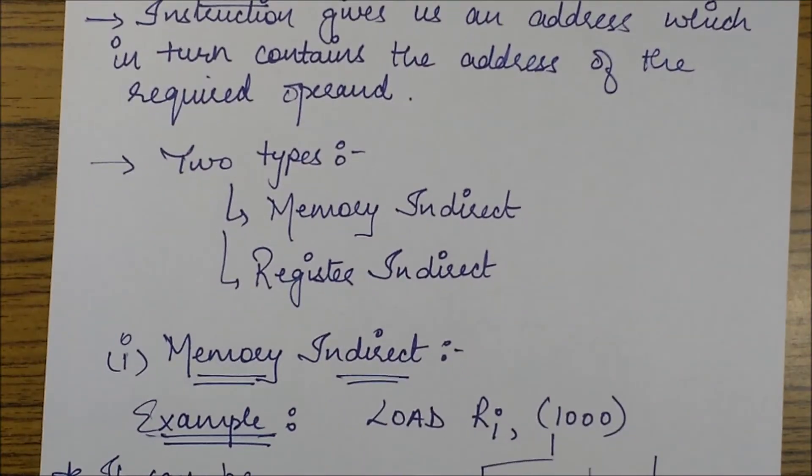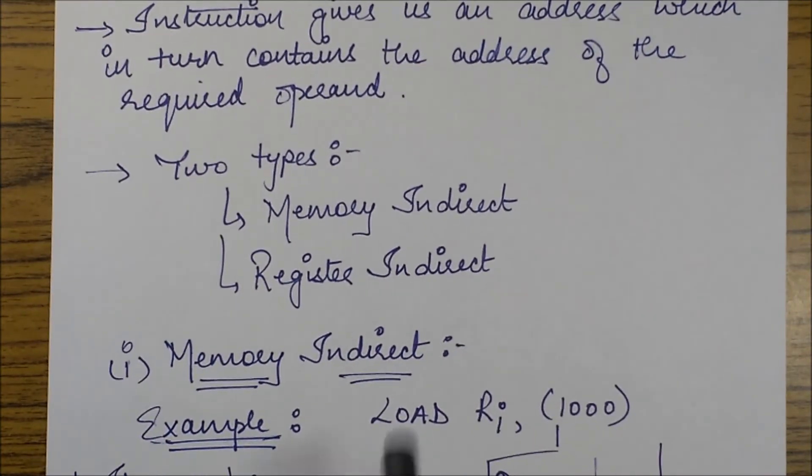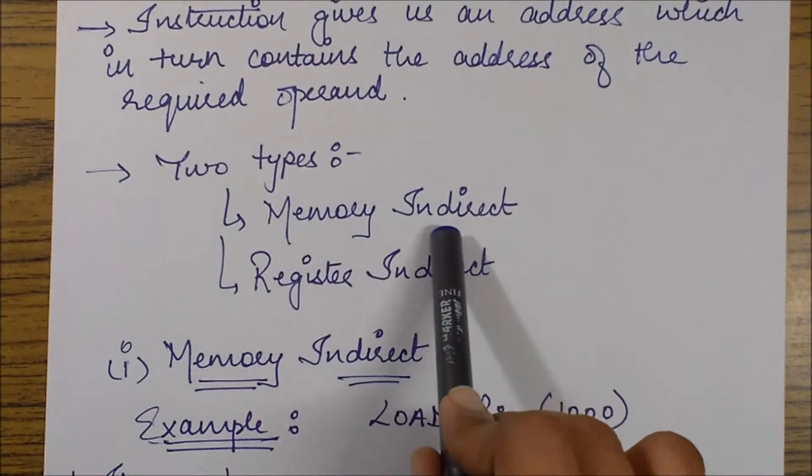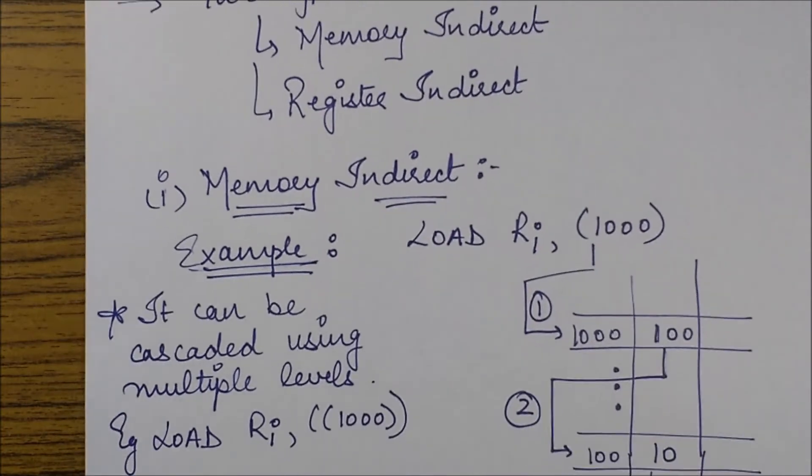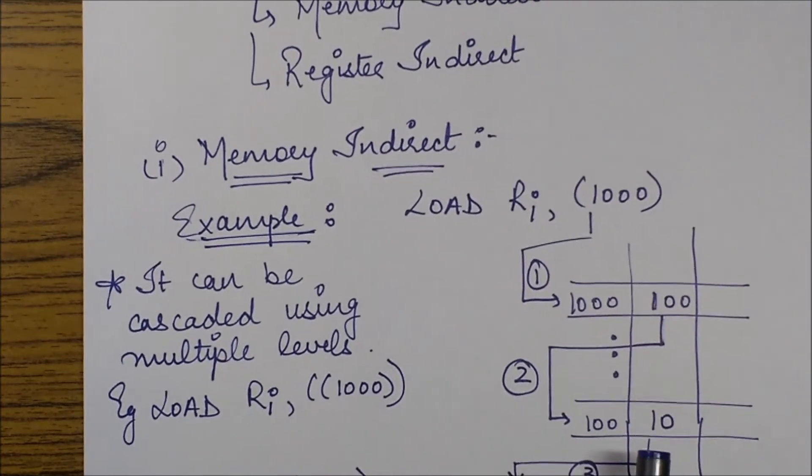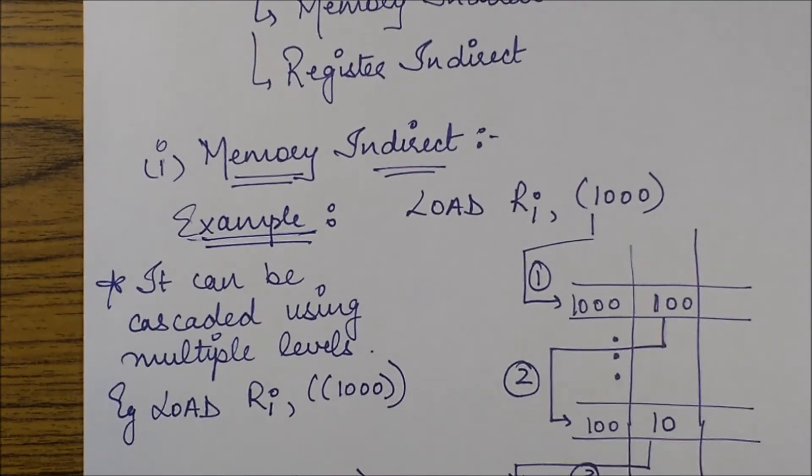Now there are two versions available of this. You can either perform a memory indirect operation or you could perform a register indirect. We will see both of them one by one. So first of all, let's see what is a memory indirect operation.